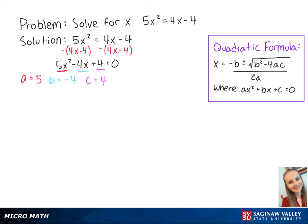So using the quadratic formula, we get x equals 4 plus or minus the square root of negative 4 squared minus 4 times 5 times 4 all over 2 times 5. This is equal to 4 plus or minus the square root of negative 64 all over 10.